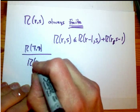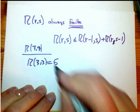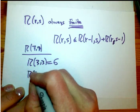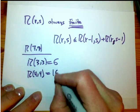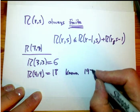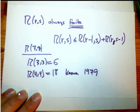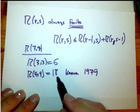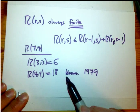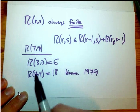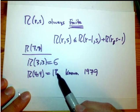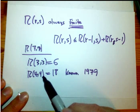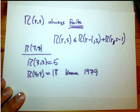R(3,3) — I gave you essentially a complete proof that that's 6. That's kind of the only one that's easy, besides maybe R(1,3) or something like that. R(4,4) is 18, and that's been known since at least 1979. That's already quite a bit more intricate to know than R(3,3)=6. This says that if you have 18 people at the party, you're guaranteed there will be either 4 people who all know each other or 4 people who are all complete strangers — one of those things has to happen.